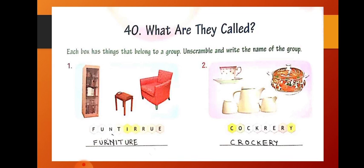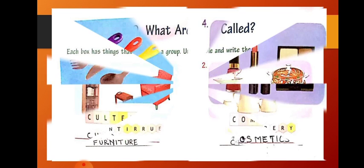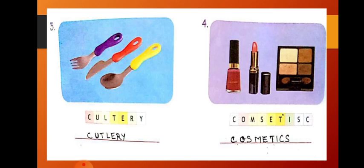The first one is furniture. Second one, C-O-C-K-R-E-R-Y. It is crockery. Write the correct spelling, crockery. C-R-O-C-K-E-R-Y. And the third one is cutlery. Write the correct spelling, C-U-T-L-E-R-Y.